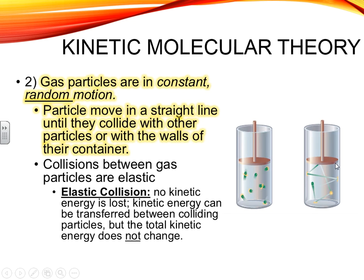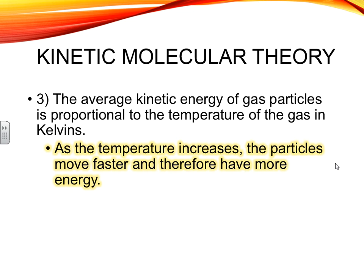The third postulate says that kinetic energy is proportional to temperature. Temperature is actually a measure of the average kinetic energy of a system. Kinetic energy is the energy of motion of a substance. As the temperature increases, the particles move faster and they have more energy, because temperature and kinetic energy are proportional. So if you increase the temperature, you're increasing the energy of motion — the kinetic energy — and it makes sense that the particles are going to move faster.